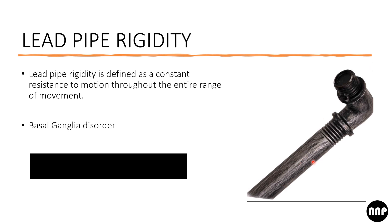Think of it like trying to fold a lead pipe — throughout the entire journey you have to constantly apply force, and throughout your attempt to bend it there will be constant resistance. Similarly, we see this type of resistance in basal ganglia disorders. The black line shown here illustrates the constant resistance to motion.